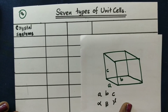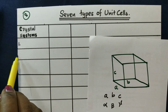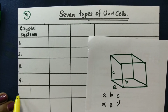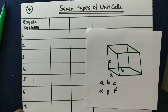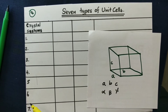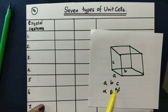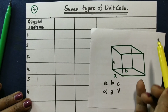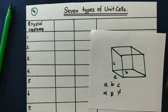We are going to describe the crystal systems. There are 7 types of unit cells. I will choose one order. Remember, I choose the order. The names of the 7 types come from the text.